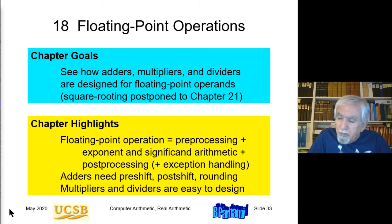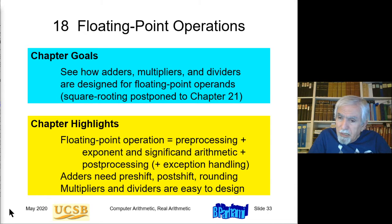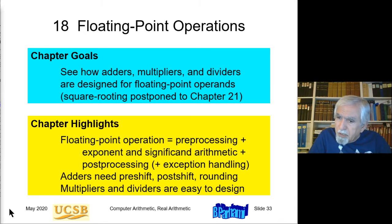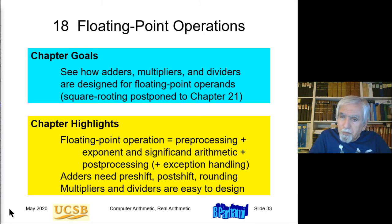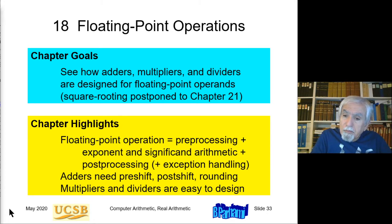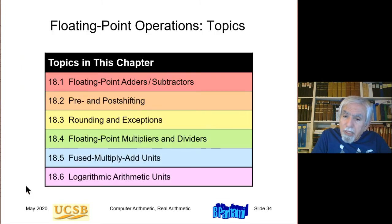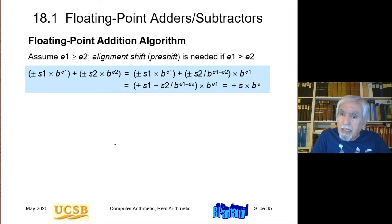Square routing, which is also a basic arithmetic operation, will be dealt with later. There is one chapter dealing with square routing for both fixed-point and floating-point numbers. So we get started by looking at floating-point addition.